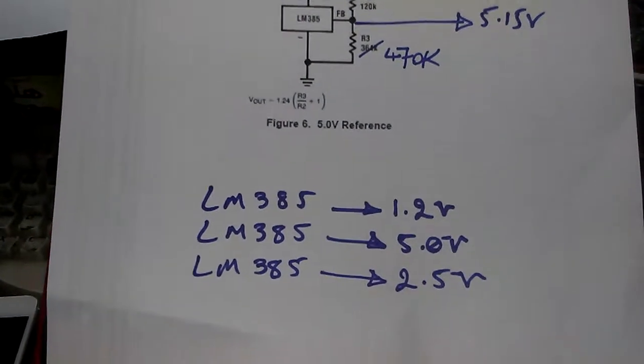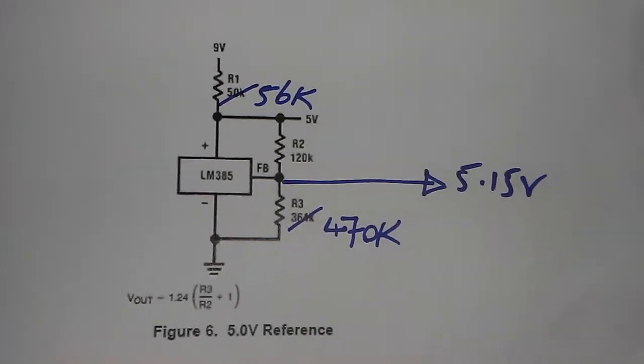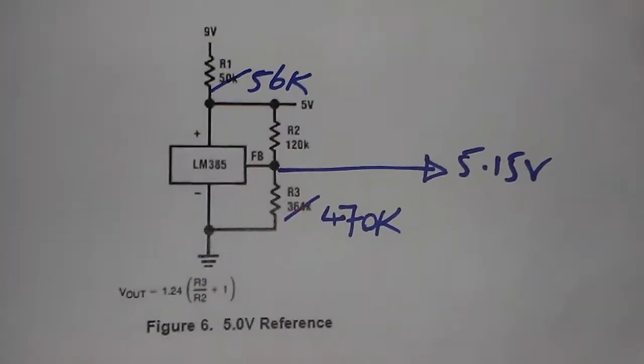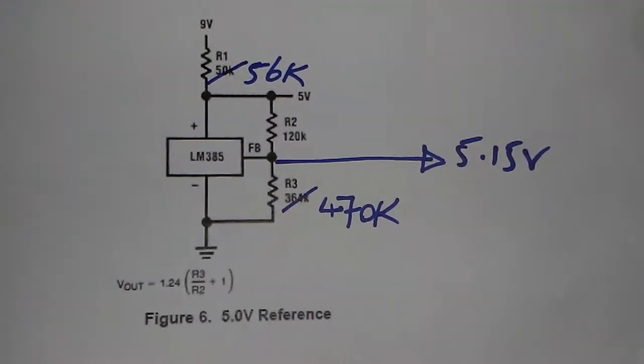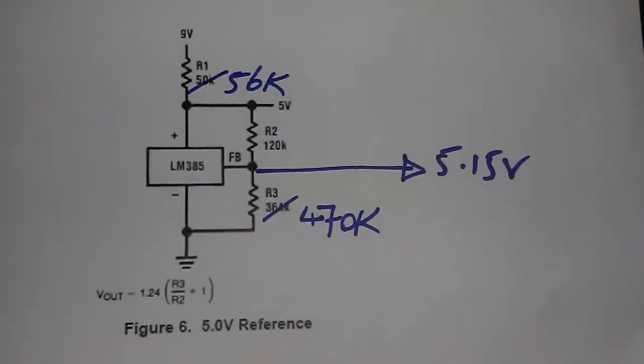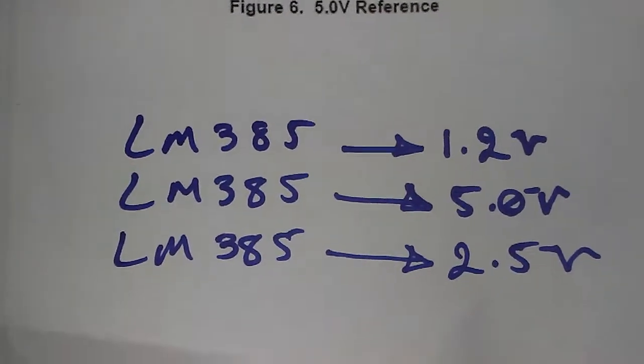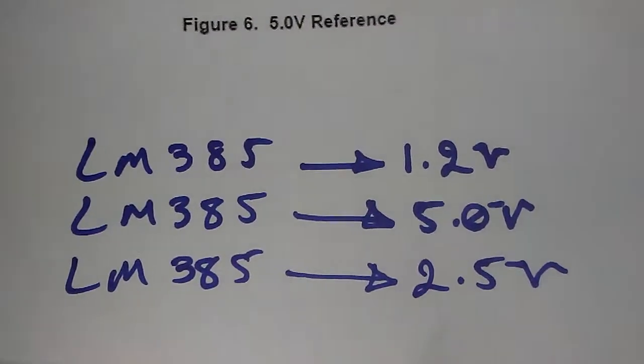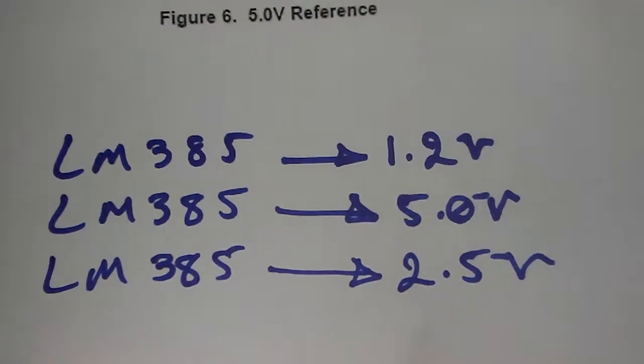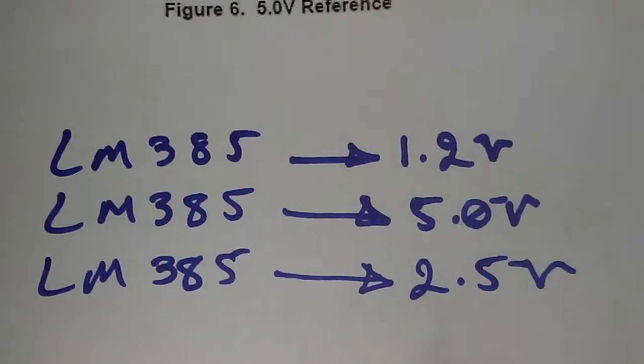This one needs three resistors: 56k, 120k, and 740k. By this configuration we have three types of LM385: the type one is 1.2 volt, the second one 2.5 volt, and the other one is 5 volt.